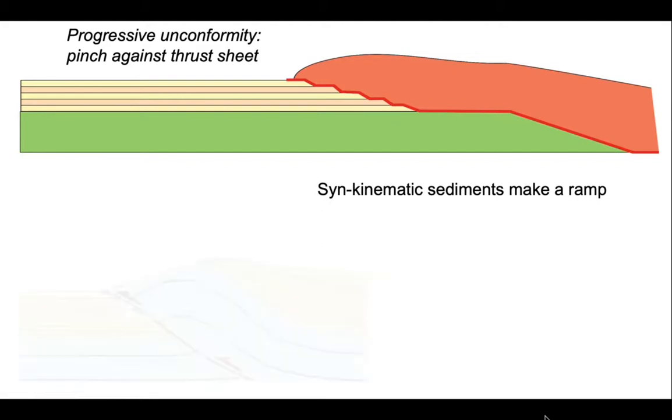So let's put this onto a cartoon. We can see a thrust ramp here defined by this lateral pinch out of the syn-kinematic strata, the strata in yellow and orange colours in here. And we can see on top of the thrust sheet a growth fan.